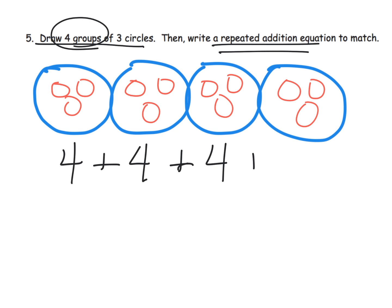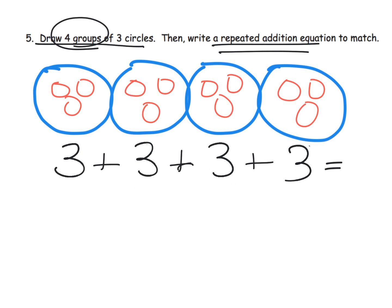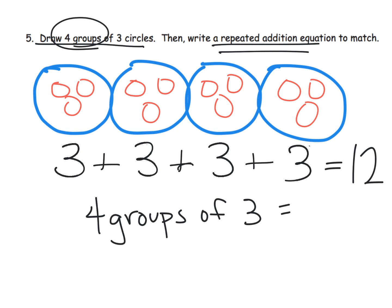I stacked them like this — but wait, those aren't fours, are they? Oh my goodness, those are supposed to be threes! So let me fix that: three plus three plus three plus three. I stacked them to create a one-to-one correspondence with each group. That equals twelve. And we can write: four groups of three equals twelve.